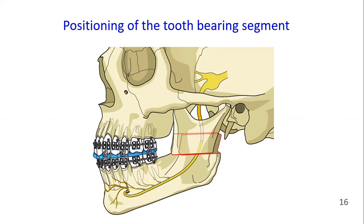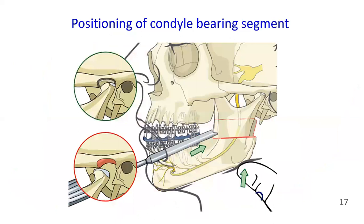A prefabricated surgical splint or wafer may be used to facilitate this. Care must be taken to maintain the normal fossa-condyle relation and to avoid condylar displacement. Usually this is achieved by manual positioning of the condyle-bearing segment superiorly into the glenoid fossa.